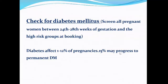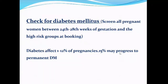All pregnant women should be screened for diabetes between the 24th and 28th weeks of gestation. For high-risk groups, screening should be done at the booking visit — the initial visit. High-risk groups include women with a positive family history, obesity, or older age. The rate of diabetes in pregnancy has been found to be 1 to 12 percent, and 15 percent of women with gestational diabetes may progress to permanent diabetes mellitus after delivery.